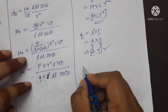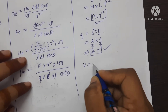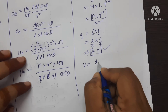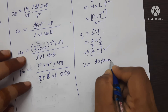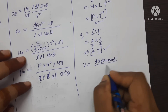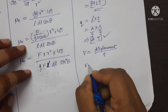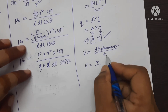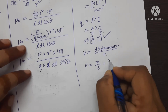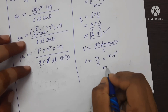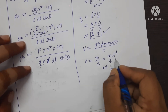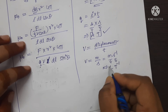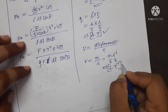Now, find the dimensions of velocity. Velocity equals displacement divided by time. The SI unit of displacement is meter and for time is second, so V = m·s⁻¹. Meter is expressed as L and second as T with power minus 1. So the dimensional formula for velocity is [LT⁻¹].